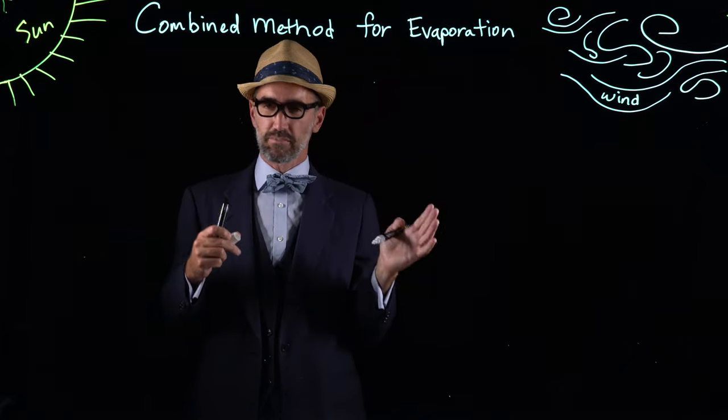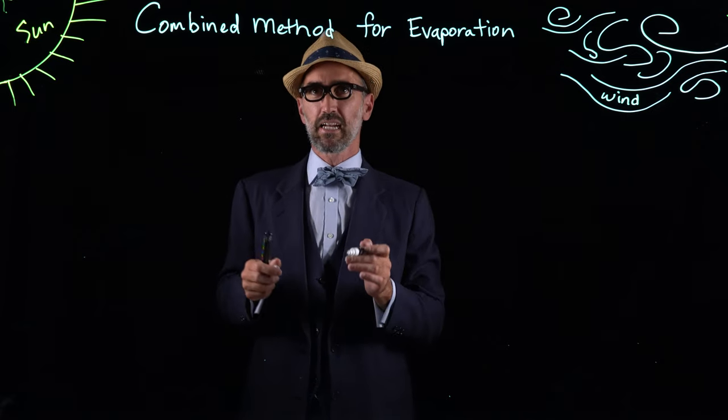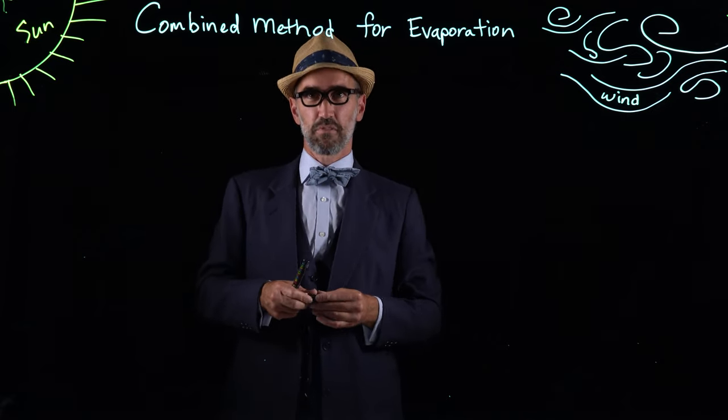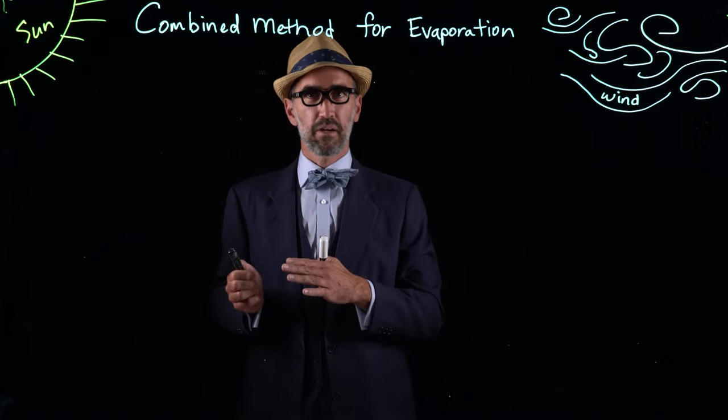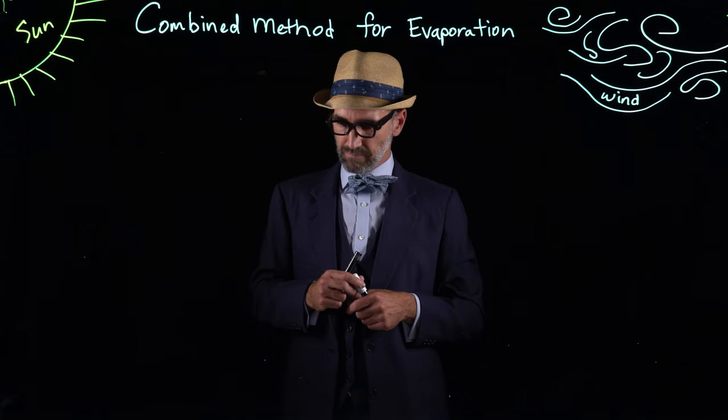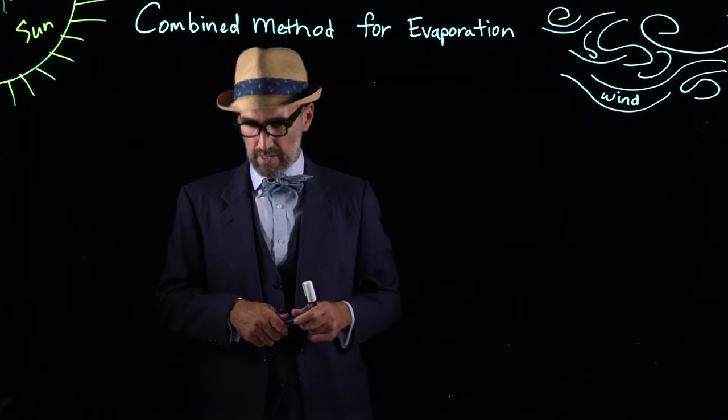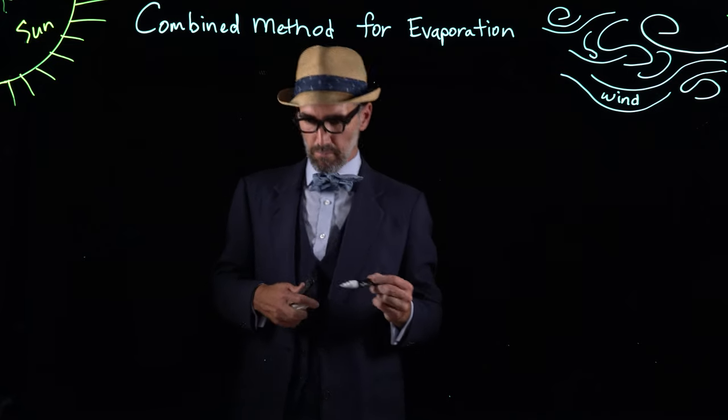We're going again back to Phoenix, to the reservoir in Phoenix, using the same results that we have for the aerodynamic method and the energy balance method. We're going to combine those with the combined method. Here our fundamental equation for the combined method is E, the rate of evaporation.